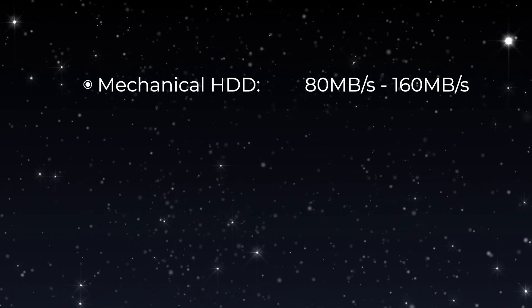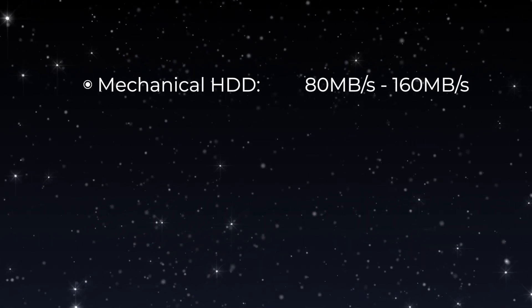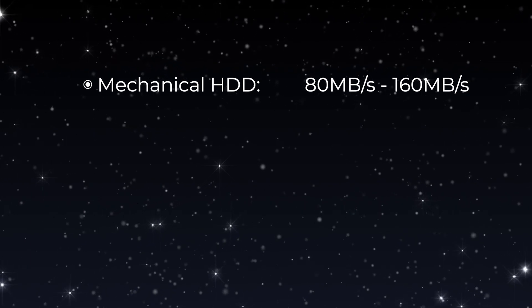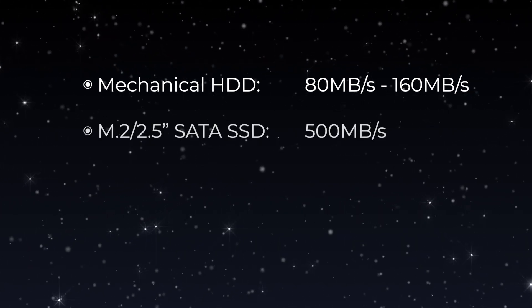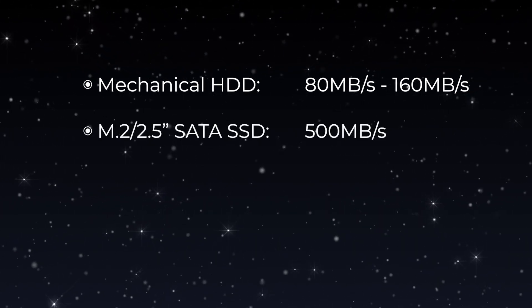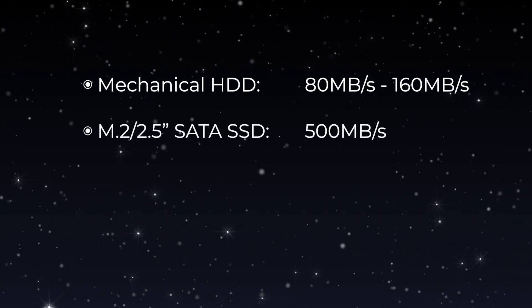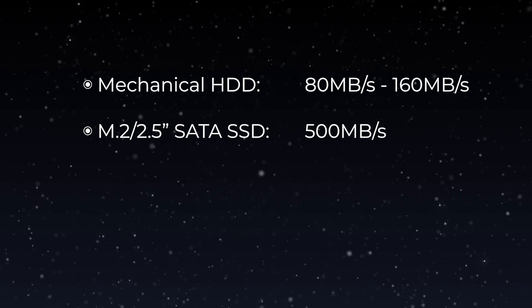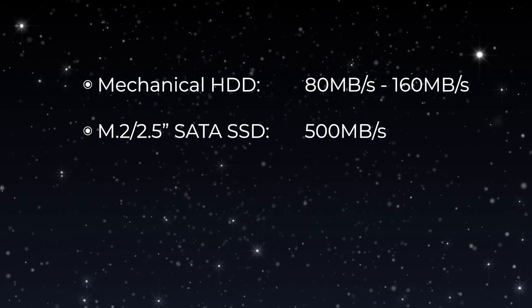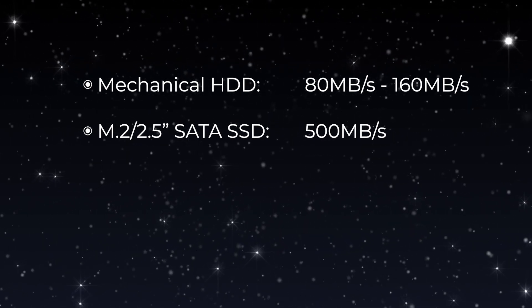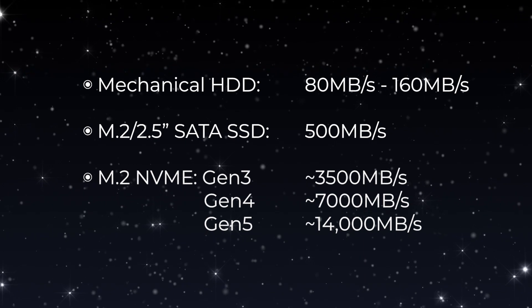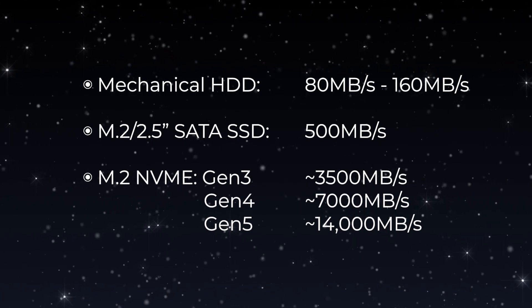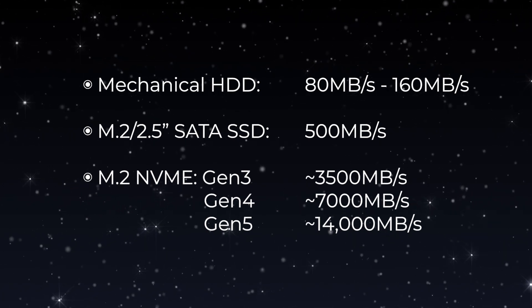A mechanical hard drive will come in at around 80 to 160 megabytes a second, while an M.2 or 2.5 inch SATA drive will max out at 500 megabytes a second sequential read and write speeds. The newer NVMe drives hit thousands of megabytes a second.